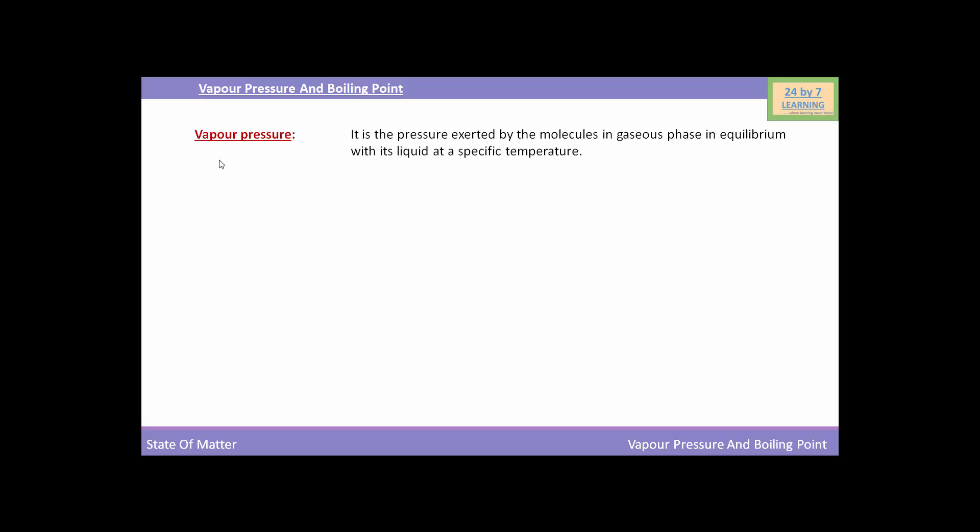What is vapour pressure? Vapour pressure is the pressure exerted by the molecules in gaseous phase in equilibrium with its liquid at a specific temperature.